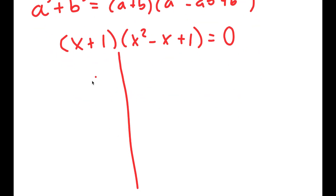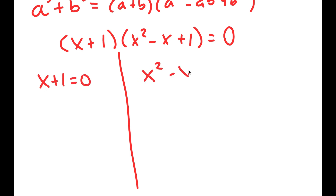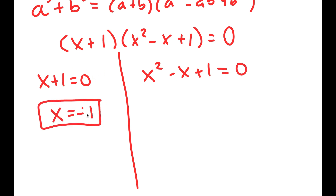This gives two equations: x plus 1 equals 0, and x squared minus x plus 1 equals 0. From the first equation, x equals negative 1.